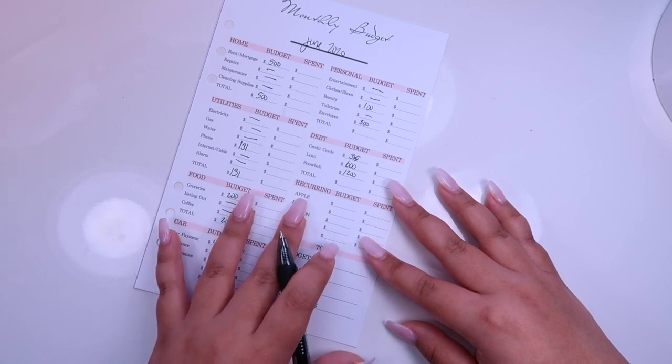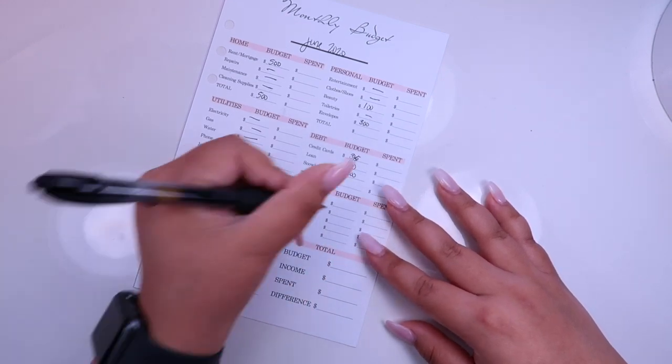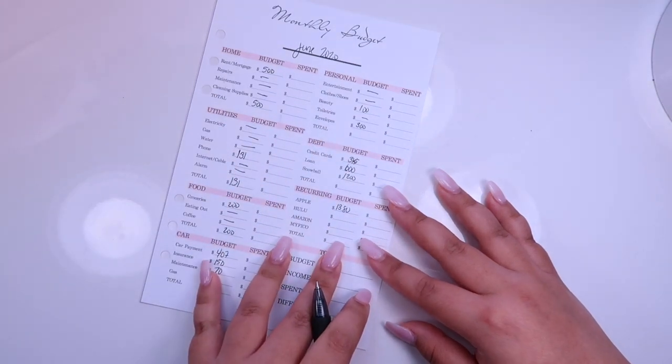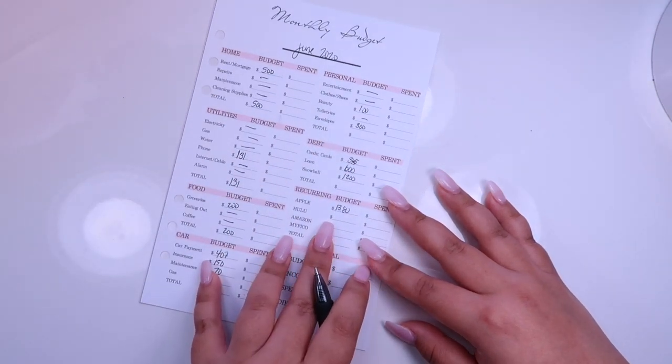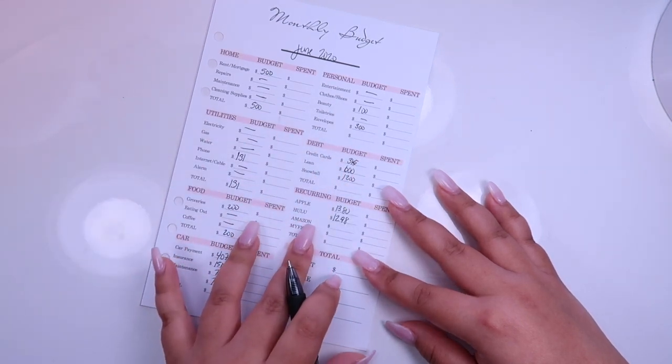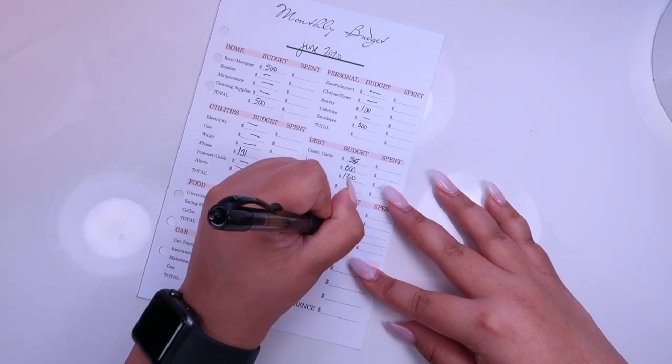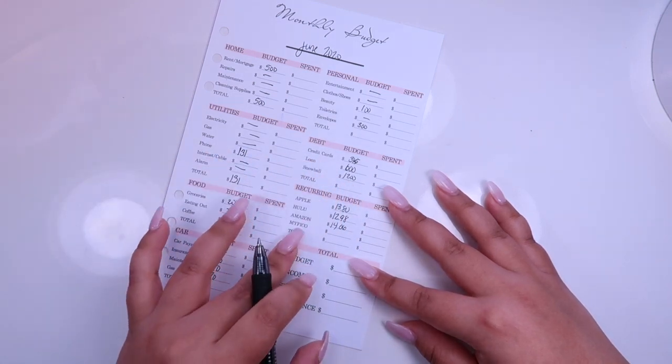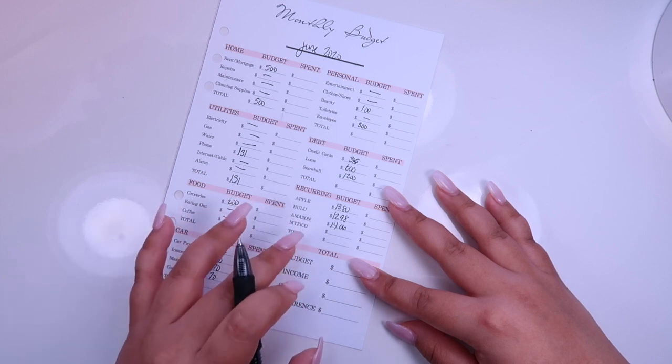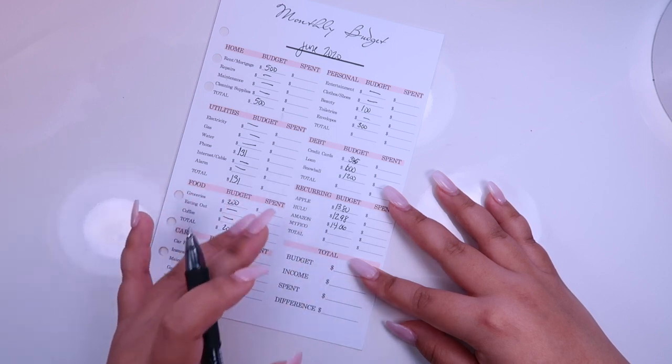And so my Apple, I have the Apple Storage and the Apple Music. So that in total is $13.80. And my Hulu is $12.98. And my Amazon is $14.06. So I don't have my FICO right now.